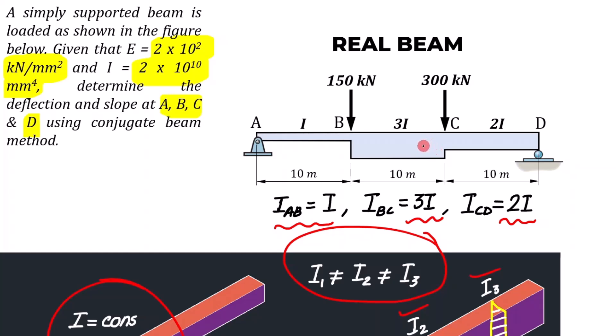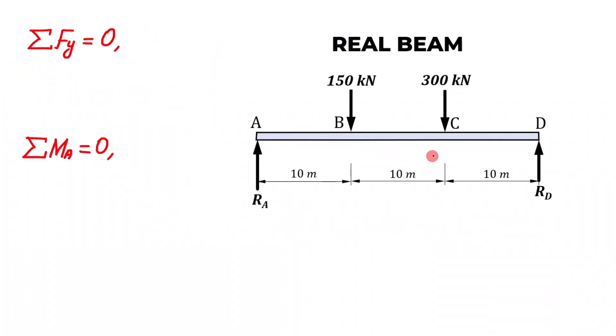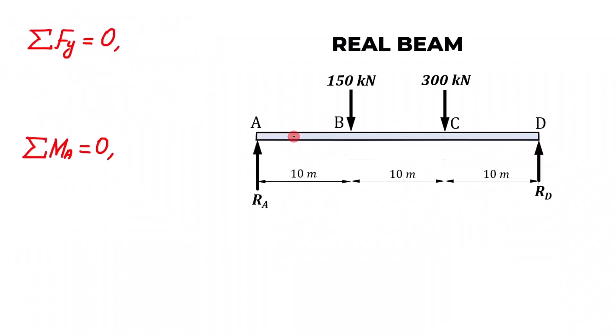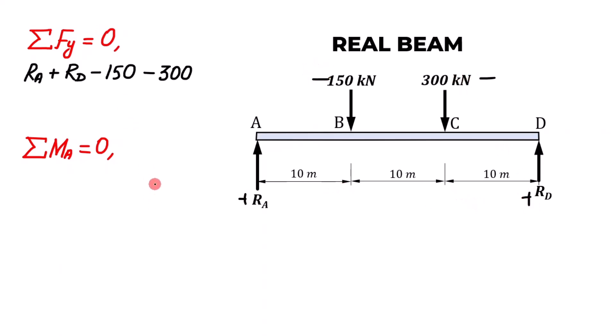Just like in the previous problem, we are going to initially assume the beam has a uniform cross section. Then we will incorporate the non-uniformity — the varying cross section — by making adjustments. Don't worry: it's a matter of adding and subtracting terms, writing them down, and simplifying the equation.